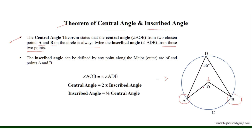The central angle from points A and B is equal to angle AOB, and the inscribed angle from points A and B is angle ADB, where D is a point on the circumference of the circle.